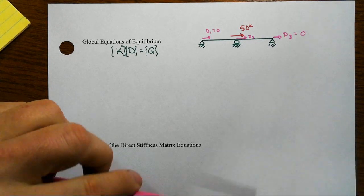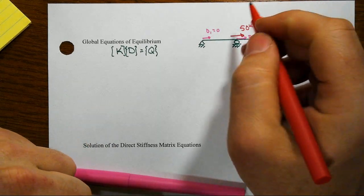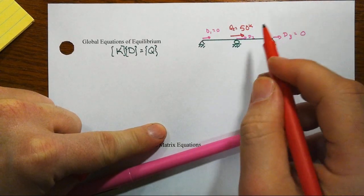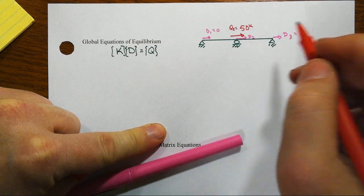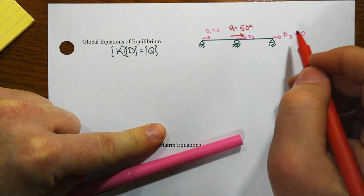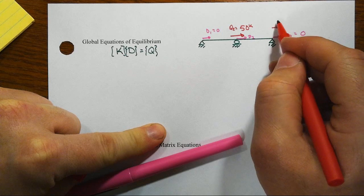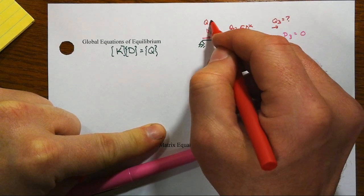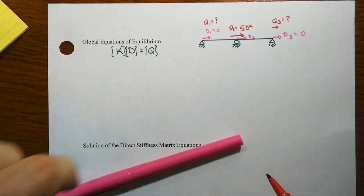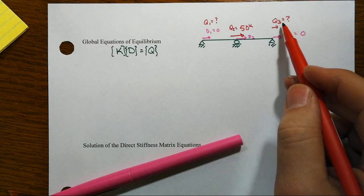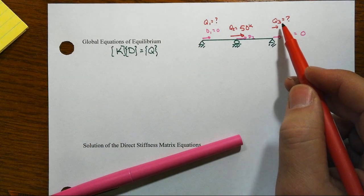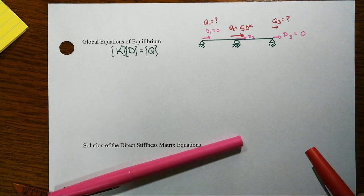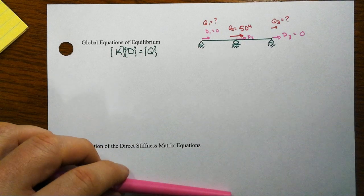We know that Q2 equals positive 50 kips—it's a nodal applied force. We don't know what Q3 and Q1 are; these are the reactions. We can't specify both the applied nodal force and the nodal displacement at once—those are either at a support or free.